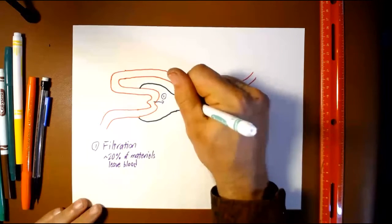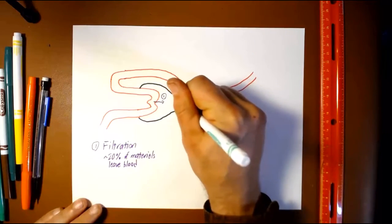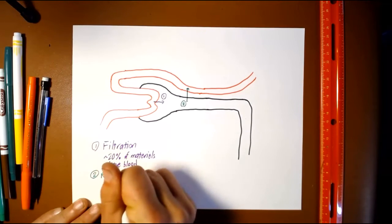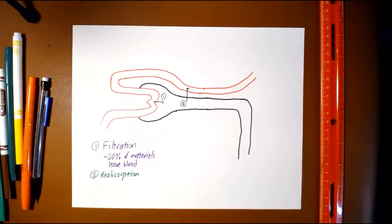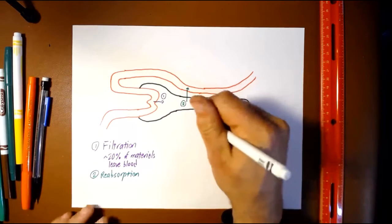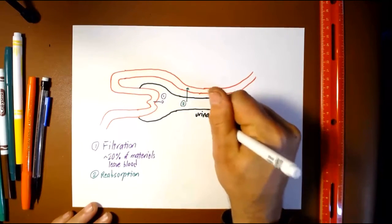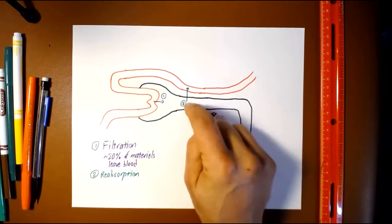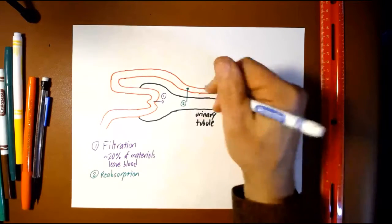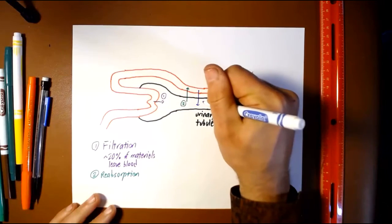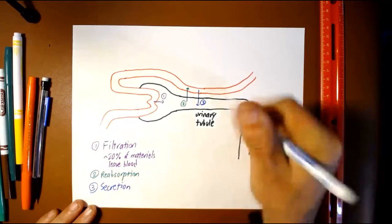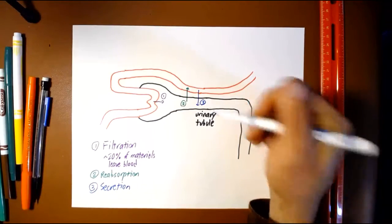After that we've got the process of reabsorption, where we are selectively moving things from the urinary tubule back to the blood — so that we keep them. We also have secretion, where we are selectively moving things from the blood to the urinary tubule to get rid of them.